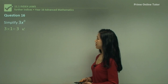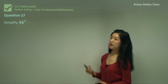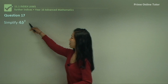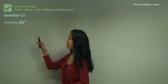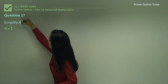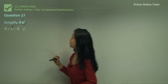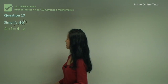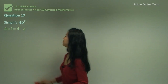Question seventeen: 4 times b to the power of 0. Again, 0 is a power to b only. So b to the power of 0 is 1, making it simply 4. It's very easy as long as you remember that anything to the power of 0 is 1.